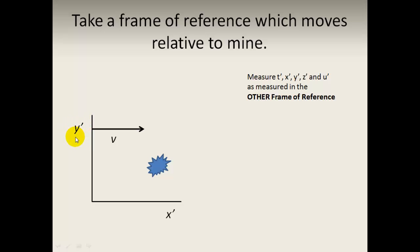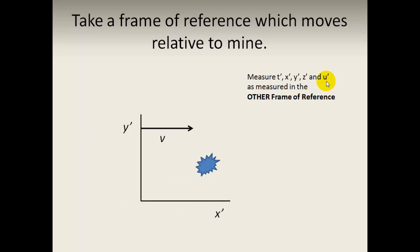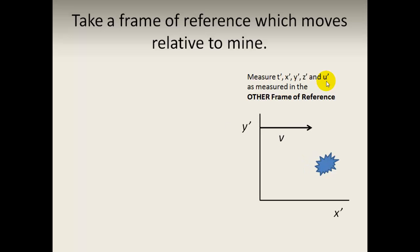This frame of reference is moving relative to mine at a velocity V. The event happens here, so we measure T prime, X prime, Y prime, Z prime as measured in the other frame of reference by somebody in that frame of reference. For example, this frame is moving to the right and they will have their own values for X prime, Y prime, T prime.